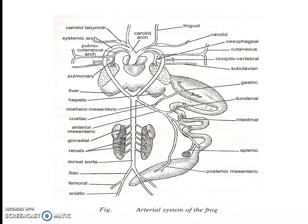Posteriorly, the right and left systemic arches join to form the dorsal aorta. From their junction arises the celiaco-mesenteric artery, whose branches supply blood to the alimentary canal, pancreas, and spleen.